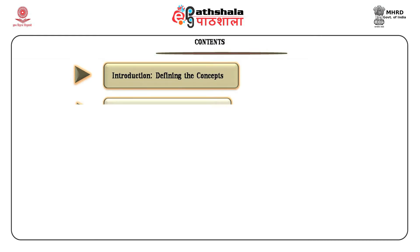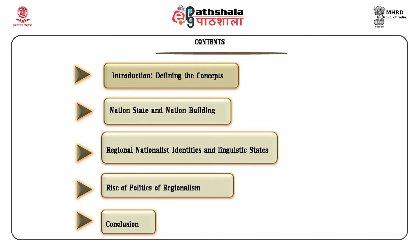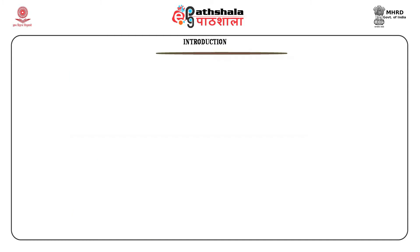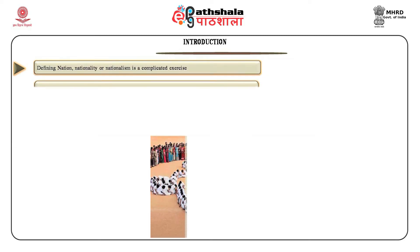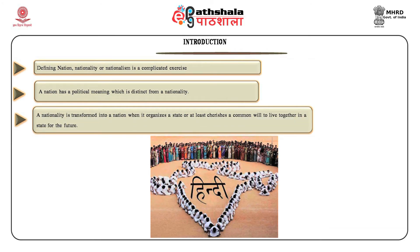The objectives: first, to understand the various interpretations pertaining to the concept of nation and nationality; second, to understand the nature of Indian nation and the process of nation building in India. Defining nation, nationality or nationalism is a complicated exercise. These terms are often used to imply a multiplicity of interrelated phenomena leading to their ambivalence. One reason for such ambivalence is that they all have their origin in the same Latin word natio, which implies birth or descent. A dominant view in the past was that to become a nation, a people sharing common race, language, religion must live together in a geographical area.